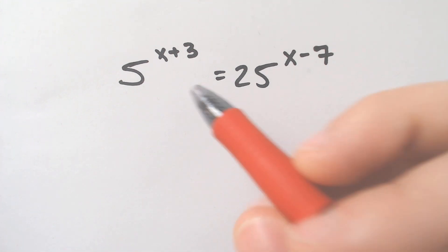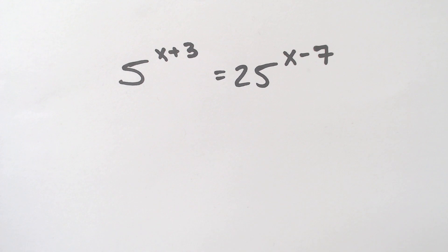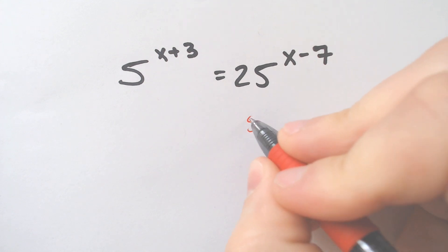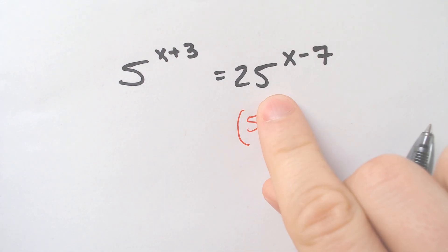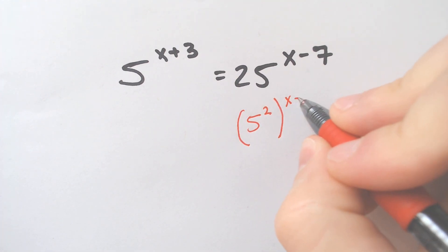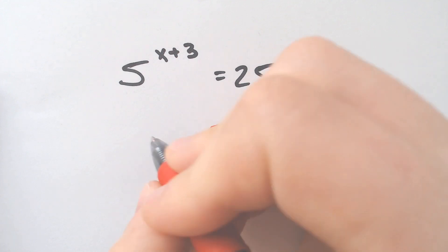where we have the 5 and the 25, I would probably want to make them both a 5 because you want to go to a smaller number, not up to a bigger number. And the way you do that is by recognizing that 25 is just 5 squared. And if you rewrite 25 as 5 squared, now the bases are the same.